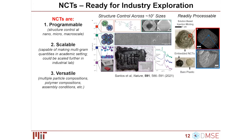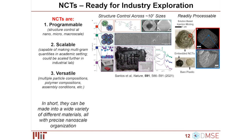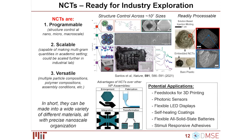This process is scalable — we can make materials on the centimeter or larger length scale, either entirely from NCTs or by embedding NCT crystallites into a traditional plastic. It is also incredibly versatile in terms of assembly conditions and readily processable, integrating into pre-existing processing pathways for traditional plastics. They can be made into a wide variety of materials while retaining nanoscale organization that induces new optical, chemical, or magnetic effects. Potential applications include feedstocks for 3D printing, photonic sensors, flexible LED displays or batteries, self-healing coatings, and stimuli-responsive adhesives.